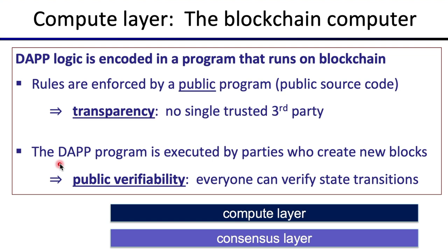We have what's called public verifiability, where anyone can look at the chain and verify that the program is executing correctly. The source code for the program is public, and all the state transitions and execution of the program are public as well. So everyone can verify that the program is correct and that it's being executed correctly. This is the beauty of running programs on the blockchain: you don't have to trust anyone to run your program correctly.